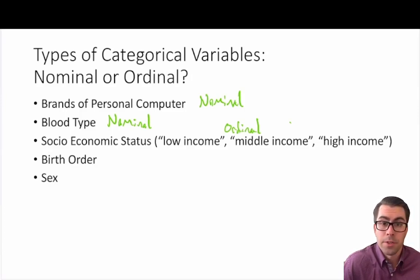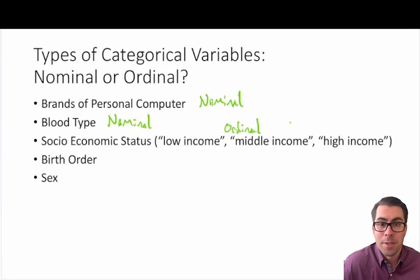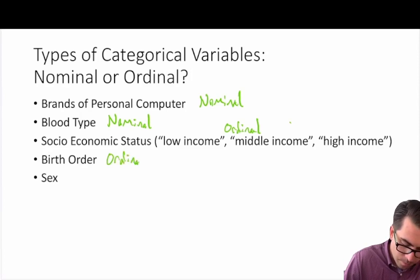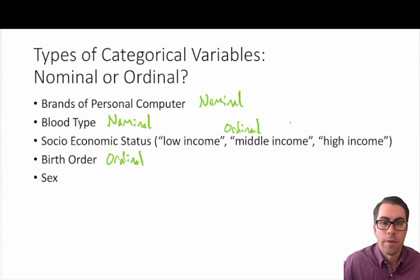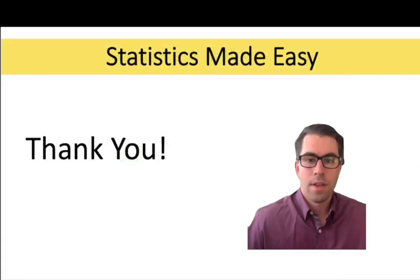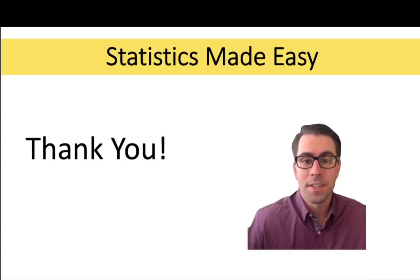Birth order — if you have siblings, you've likely described yourself as the oldest, youngest, or middle child. Whether you were first born, second born, or third born, this gives us information about the order in which you were born, so we call this an ordinal variable. Finally, the categorical variable of sex — this doesn't tell us anything about order, and there's no logical way to rank one over the other, so we label this as a nominal variable. That's it for this video! If you found it helpful, consider giving the video a like, and if you still need help with statistics, consider subscribing to the channel. I look forward to solving many more problems with you next time.